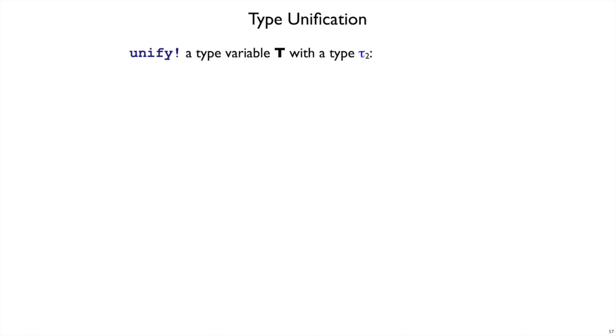The unify function takes two types, and also an expression in case of an error, but we'll ignore that part for now and just look at the two types. We'll consider first a special case where the first argument is a type variable and the second argument is anything else, and we'll consider all the possible cases.